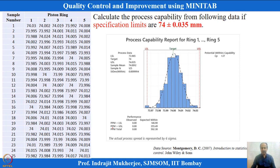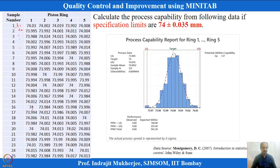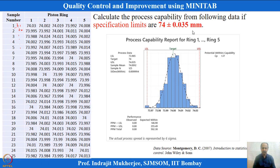We take a piston ring example with 25 observations and subgroup size of 5 each, collected at time points T1 through T25 at pre-decided intervals. The specification is given as 74 ± 0.035, giving a total tolerance of 0.07. The rational subgrouping concept is used to define how many subgroup sizes to take and what the intervals should be.